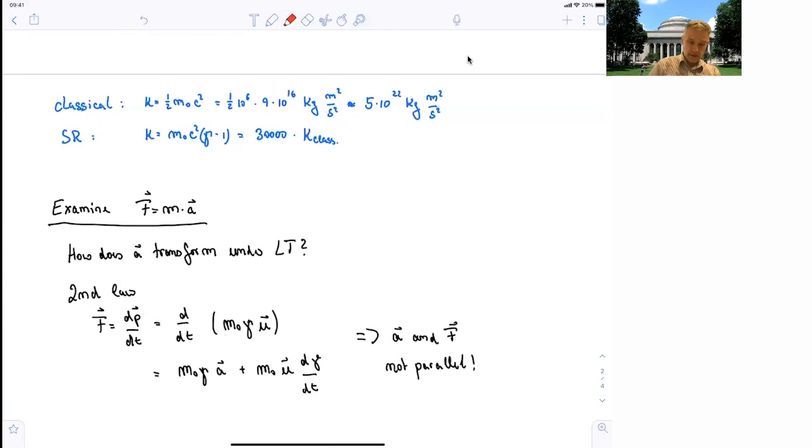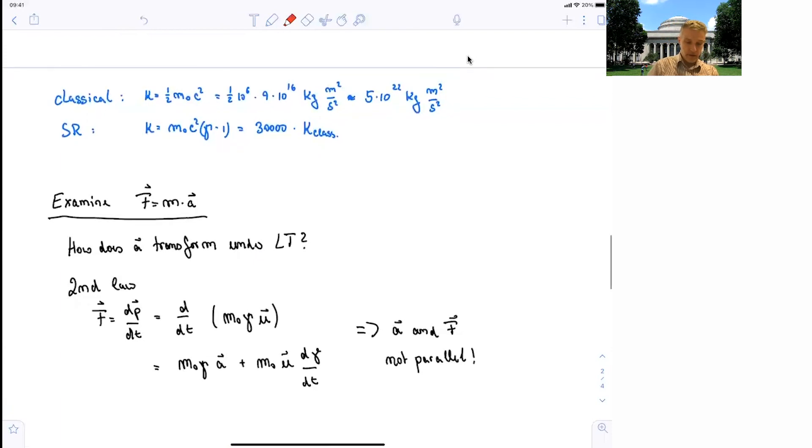But if you investigate, again, the second law of physics, the force is a change in momentum, you find that you get those two components here. One is parallel to the acceleration, so m times gamma a. But the second one is not. The second one is m0 times u times the change in time of the gamma factor. And that's not parallel to F or to A.